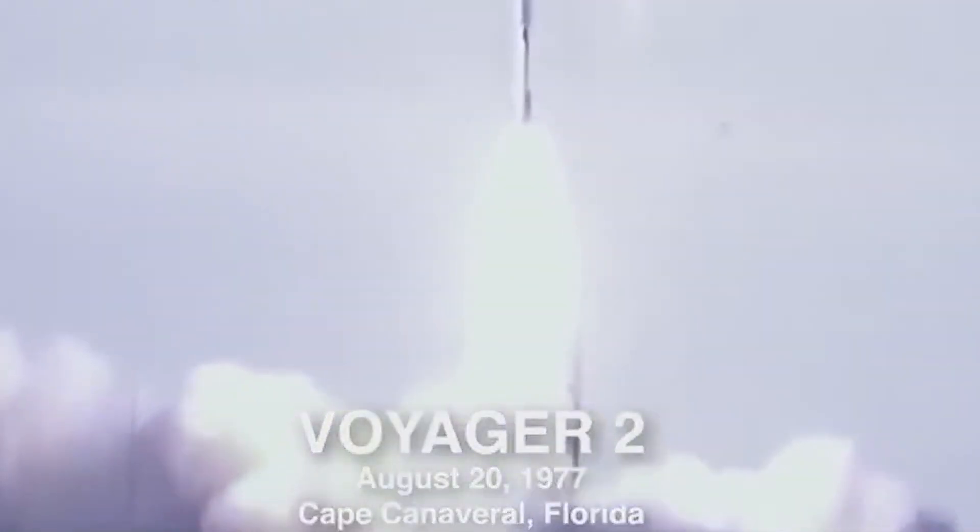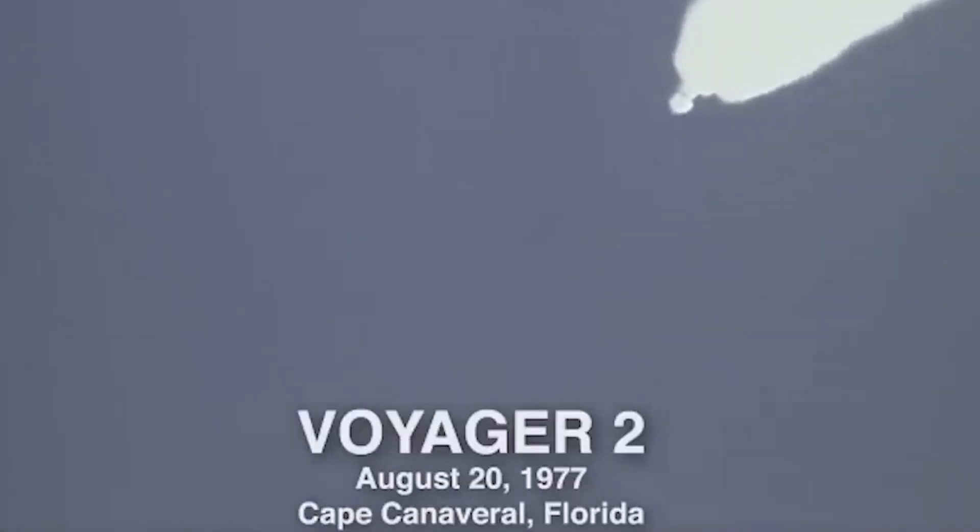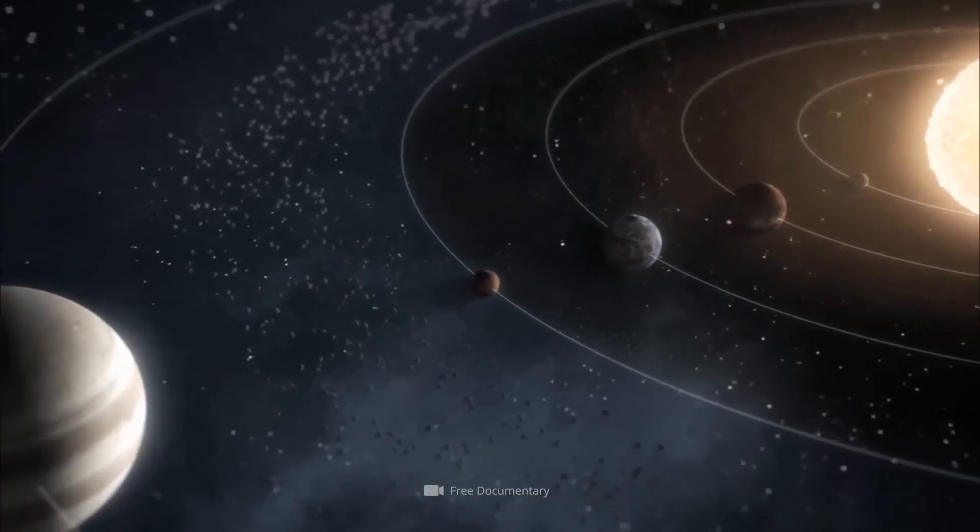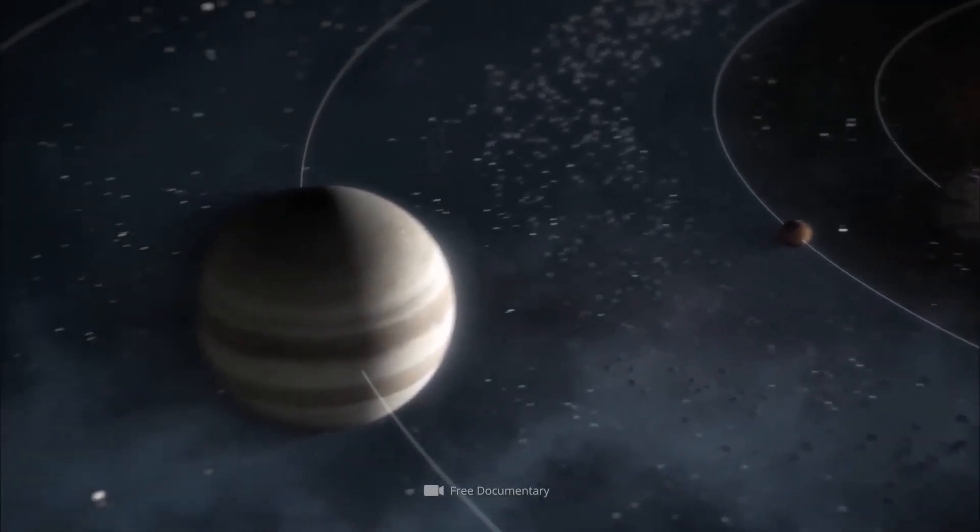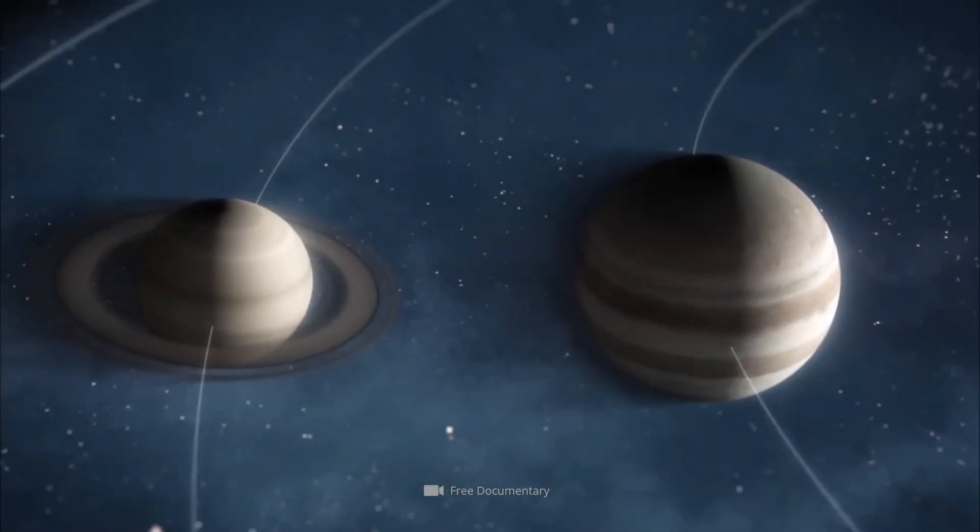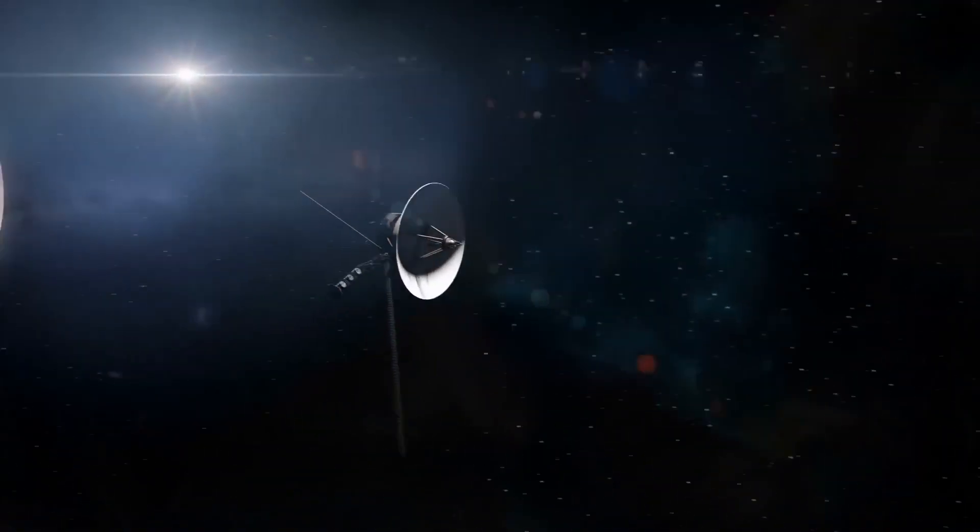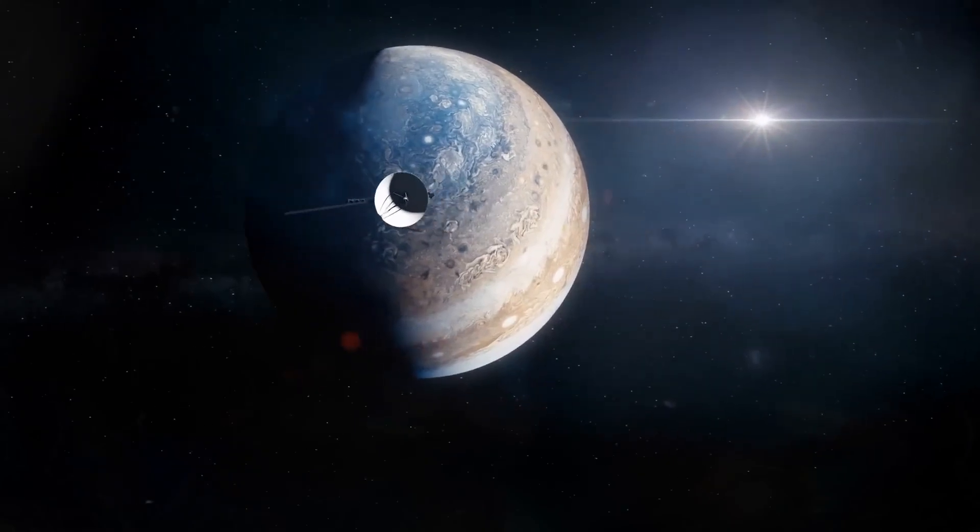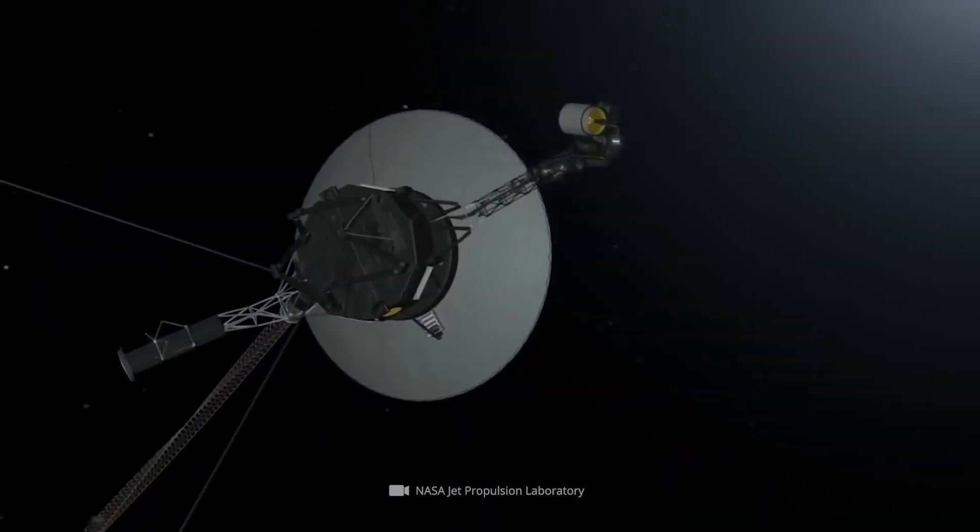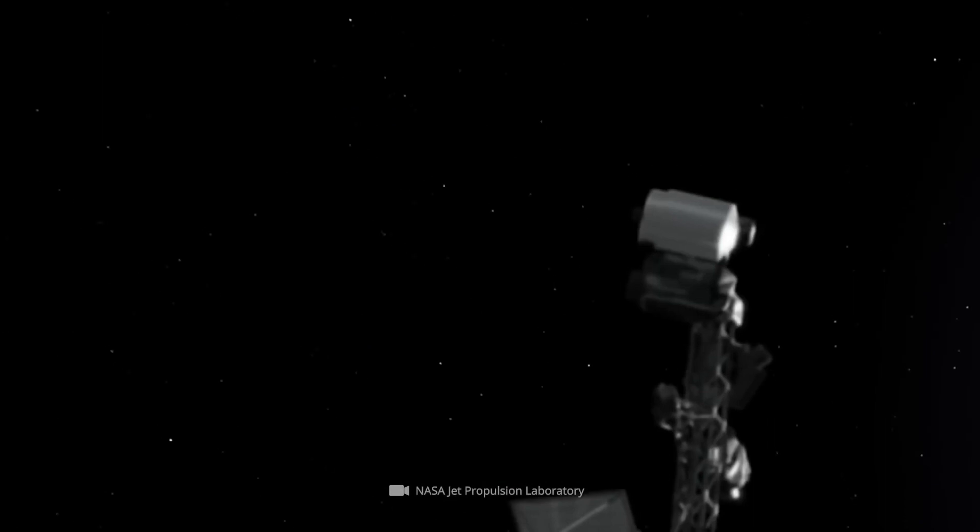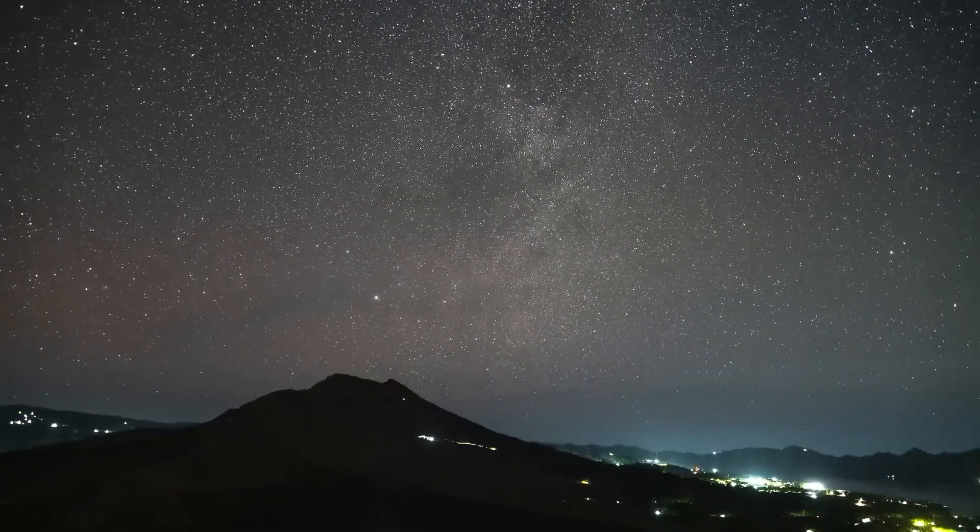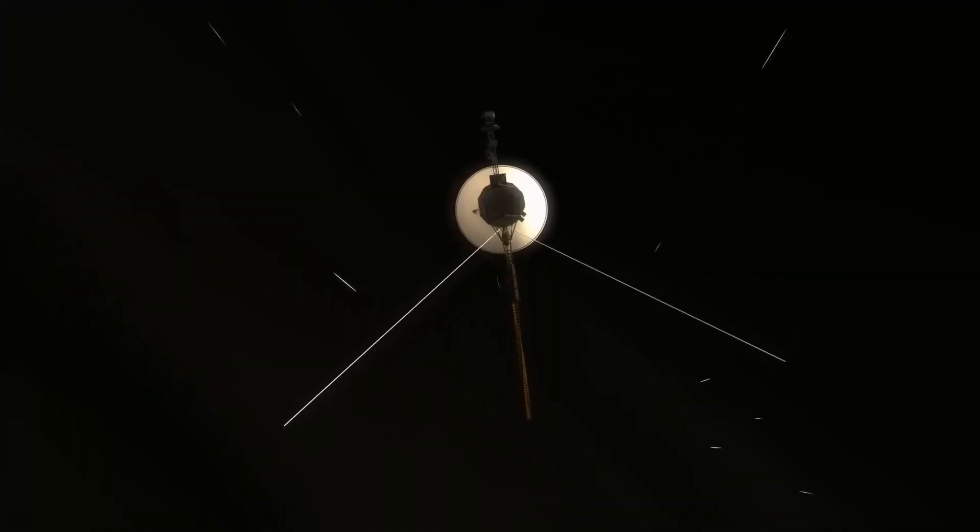Voyager 2 was launched on August 20, 1977, and its mission was to conduct a planetary study of Jupiter, Saturn, Uranus, and Neptune. But its twin probe would show that it was also capable of much more. Voyager 1 began its grand journey through space on September 5, 1977, just 16 days after Voyager 2.